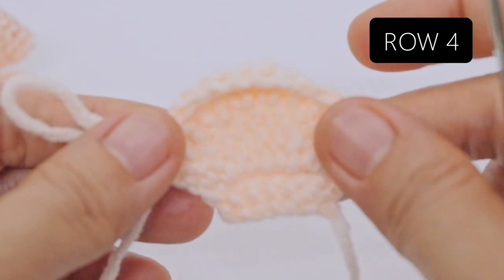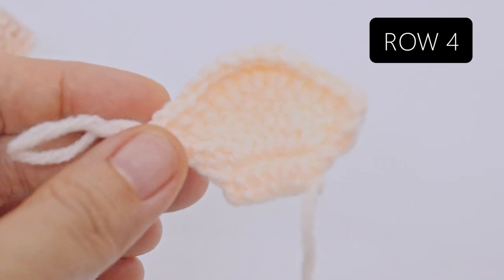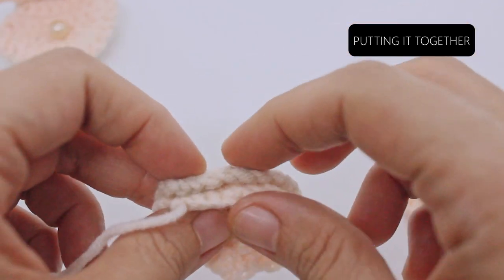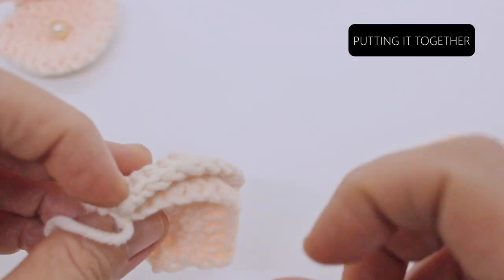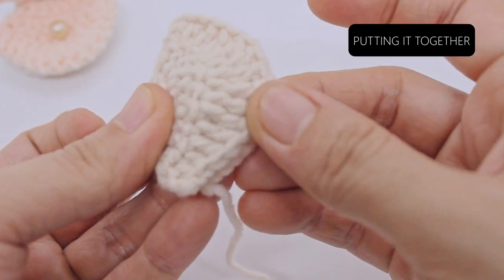Fasten off and leave a seven inch tail for sewing. Create one more shell using your cream colored yarn and two shell pieces using your flesh colored yarn. Take one piece each of cream colored shell and press together with the right side facing up.